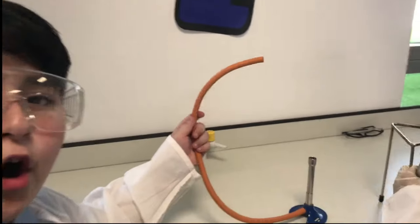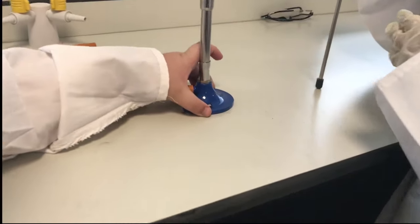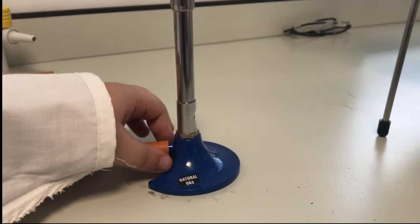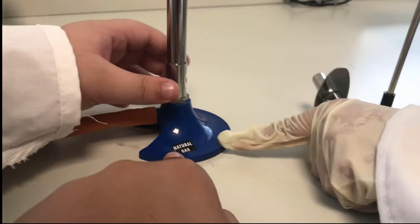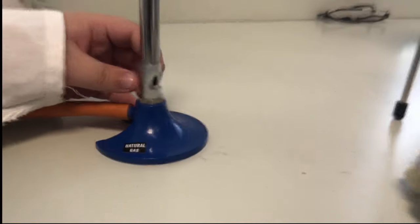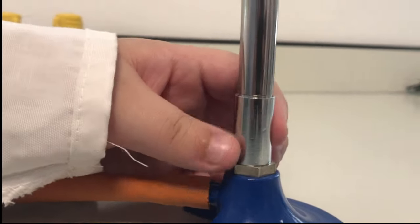So let's start by telling you the parts of the Bunsen burner. The gas pipe or the hose, some people call it, then this is the metal base, the bottom one, the blue one.